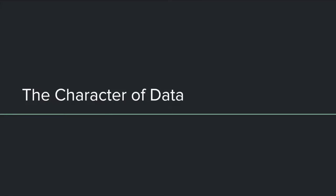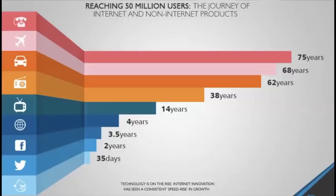First, we're going to talk about the character of data — what data can do for us and what it can't — so we can understand what we're working with before we decide how we're going to collect it. When I talk about data, I'm talking about the projection we see when companies go from a Series A startup with three individuals in a garage all the way to becoming data juggernauts in the public markets, collecting data to inform product decisions, build better AI, and understand more about their users.